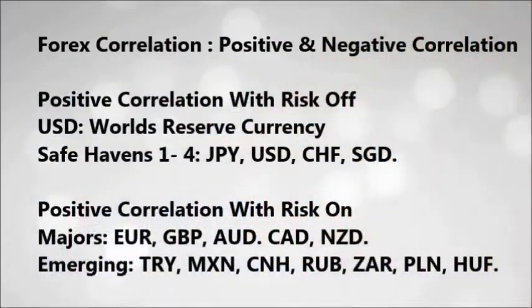So what we're going to do now is look at some currencies, their personalities, and how they're likely to fare in both a risk-on environment and, of course, if we move to risk off. I'm just going to list out the pairs and go through them. Let's look at Forex correlation in terms of positive and negative correlation with risk — currencies with positive correlation with risk off, those with risk on, and how to trade the two groups.